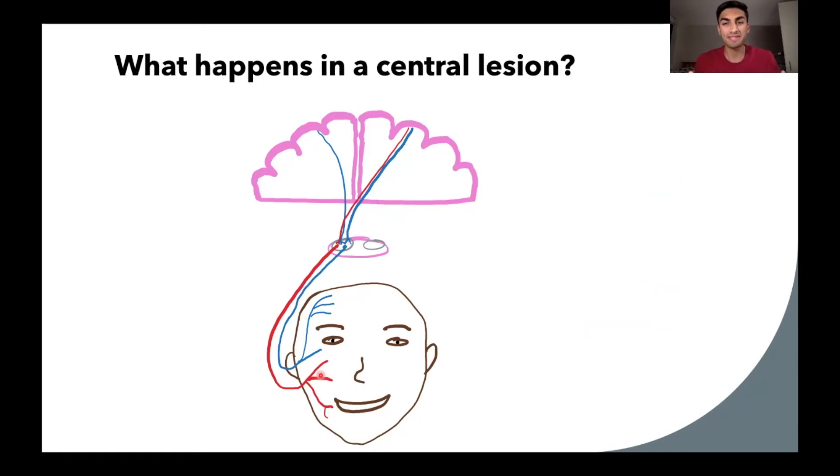Okay, so what happens in a central lesion? Like we said, say we have a stroke and say it happens in the left side of the brain. That means there's damage at this point in the pathway, and so now we can trace down and see what happens. If we look at the red neuron that controls the lower face, if there's damage here, go all the way down, we would expect that there would still be deficits here. And indeed, that's the case. On the left side of the brain, we have a stroke, we're going to result in paralysis on the lower right side of the face.